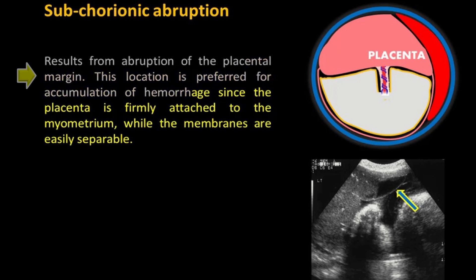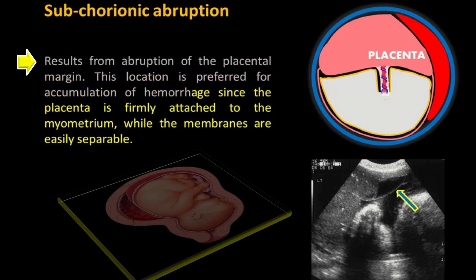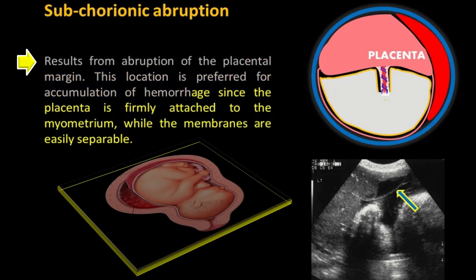Subchorionic abruption results from abruption of the placental margin. This location is preferred for the accumulation of hemorrhage since the placenta is firmly attached to the myometrium while the membranes are easily separable.